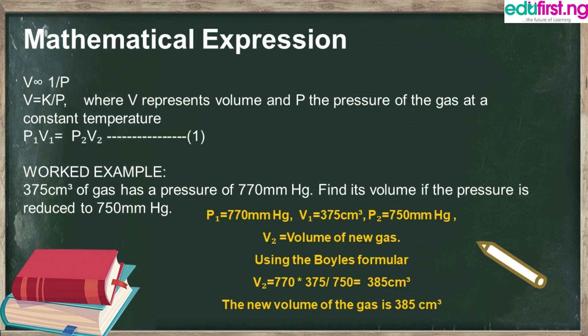Worked example for Boyle's Law: 375 cm³ of a gas has a pressure of 770 mmHg. Find its volume if the pressure is reduced to 750 mmHg. The first thing you do is list out your parameters. 375 cm³ is our V₁, 770 mmHg is our P₁, P₂ is 750 mmHg, and we are looking for V₂.